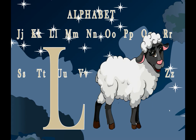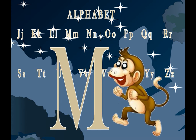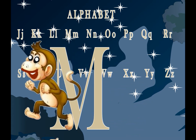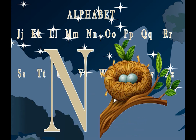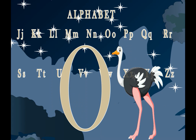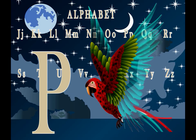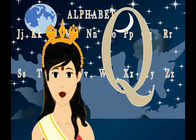L for lamb. L for lion. L for lotus. M for monkey. N for ostrich. P for parrot. P for peacock. Q for queen.